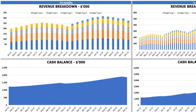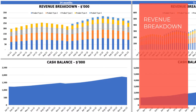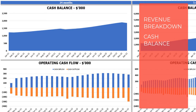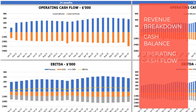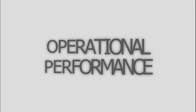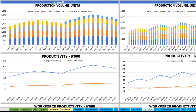On the financial charts tab you can see the main financial outputs in graphical form. On the left side you see charts for 24 months; on the right side for five years or 60 months. The top charts show revenue breakdown by product types. The next charts show cash balance for two and five years. Below that, operating cash flow broken down by inflow and outflow. Then an EBITDA breakdown showing revenue, COGS, and OpEx, with the resulting EBITDA value shown as a yellow line by month.